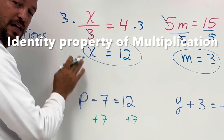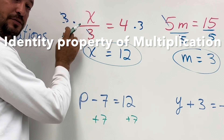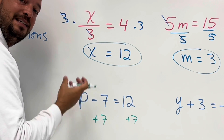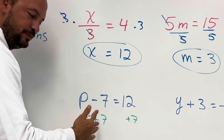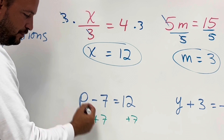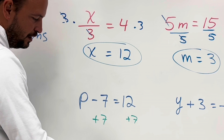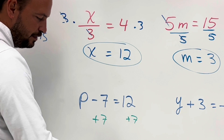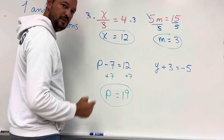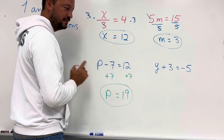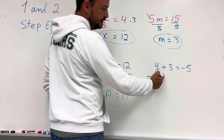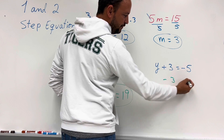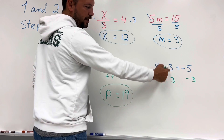Here we use the property of addition, and in the earlier example we used properties of multiplication. We need a 1 to multiply by a variable, and we need a 0 to add with the variable. So this becomes 0, and we're left with p. Then we add those two numbers — one step, just adding 7.